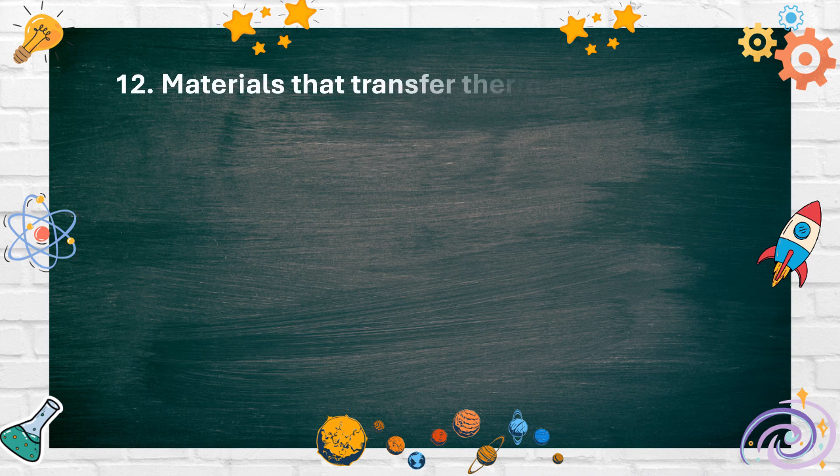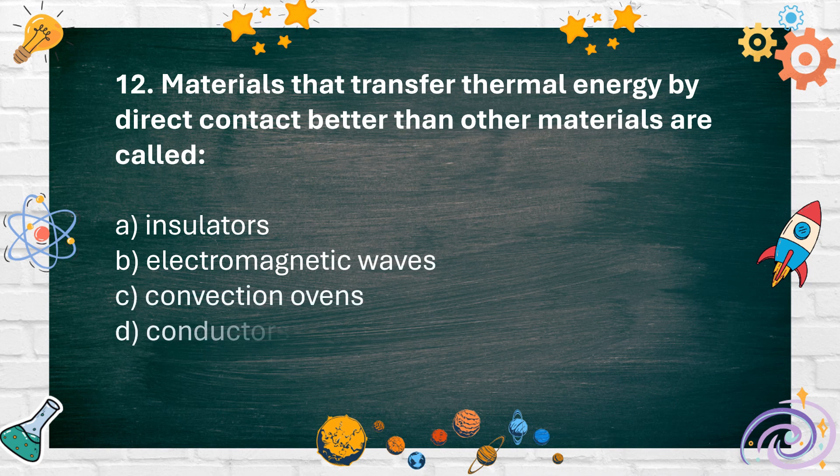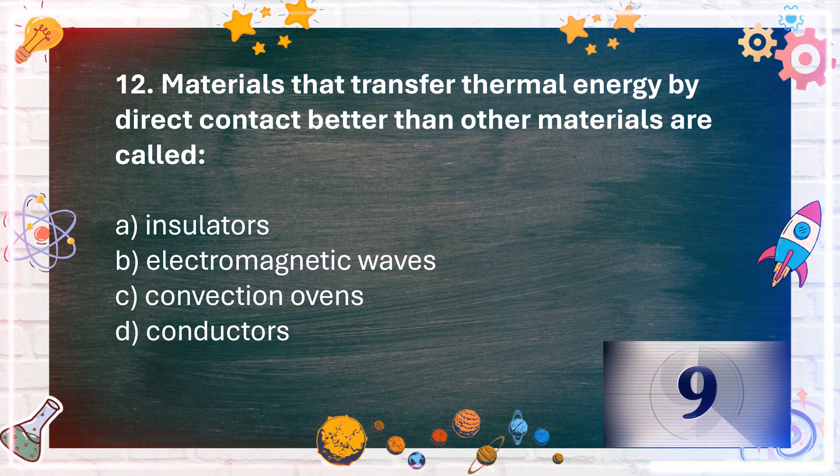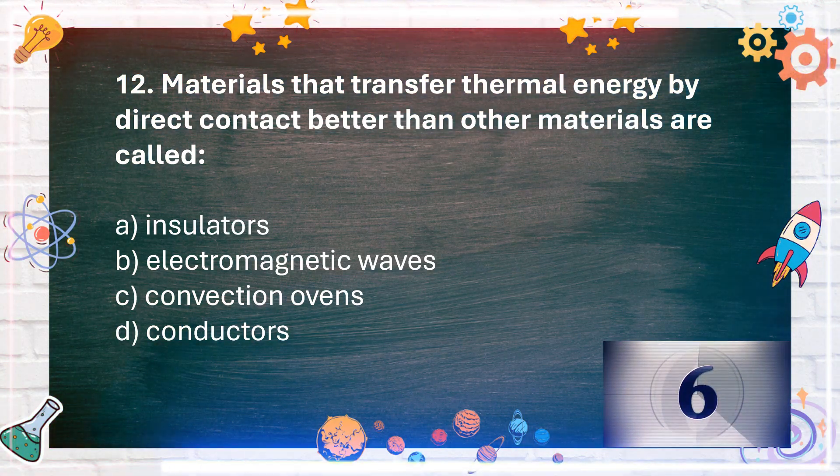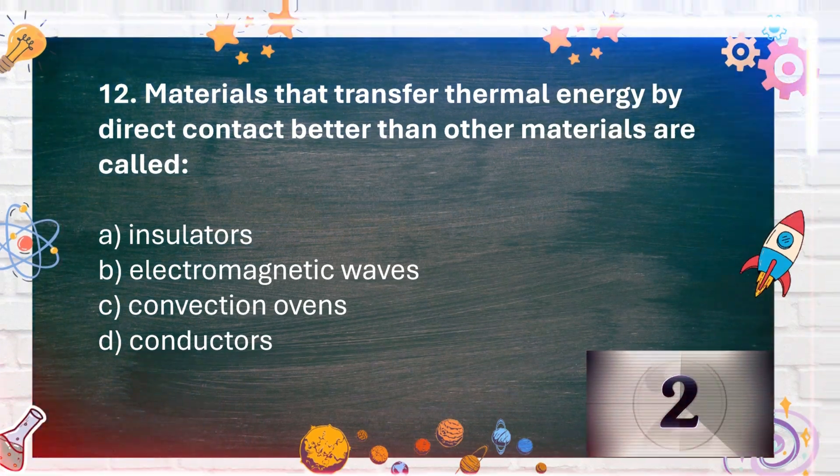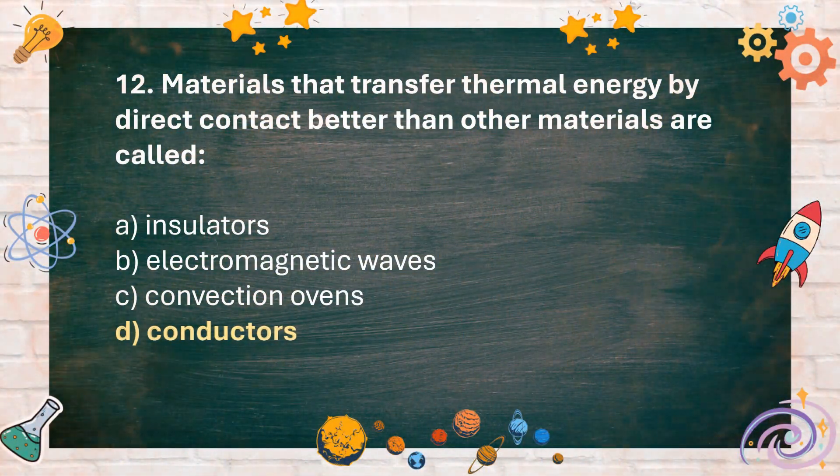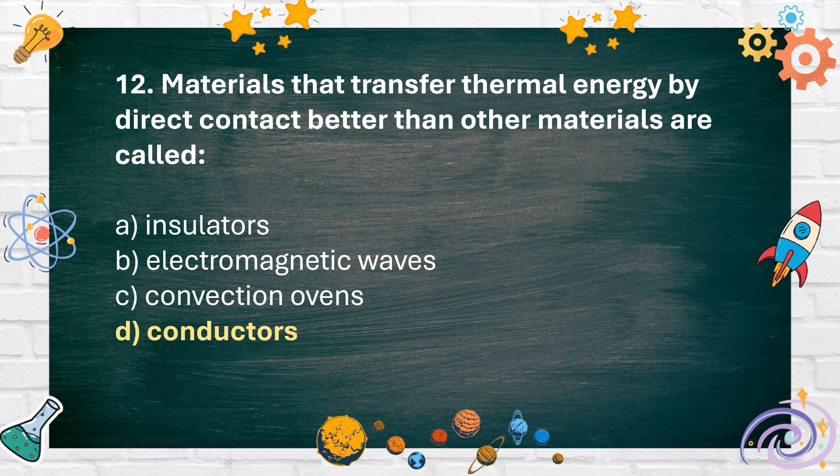Number 12. Materials that transfer thermal energy by direct contact better than other materials are called A. Insulators B. Electromagnetic waves C. Convection ovens D. Conductors. The answer is D. Conductors.